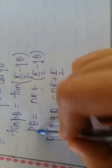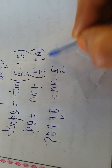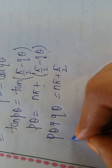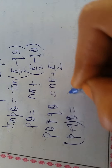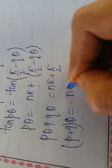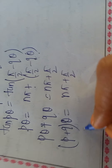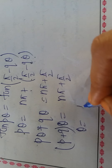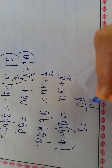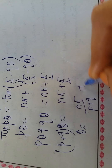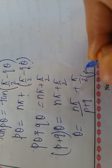Taking θ common: θ(p + q) = nπ + π/2. So θ = nπ/(p+q) + π/(2(p+q)).